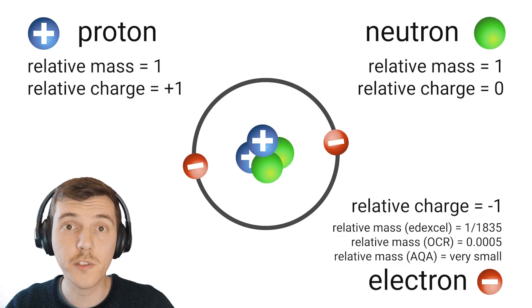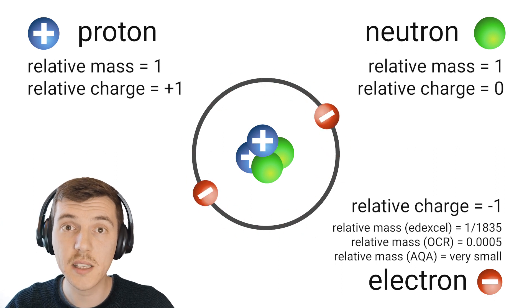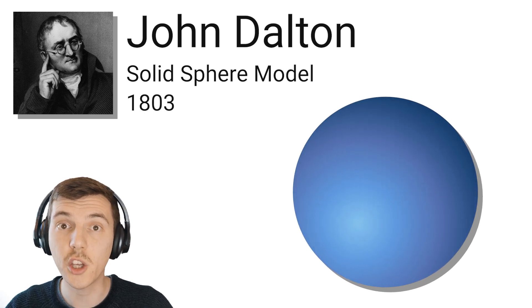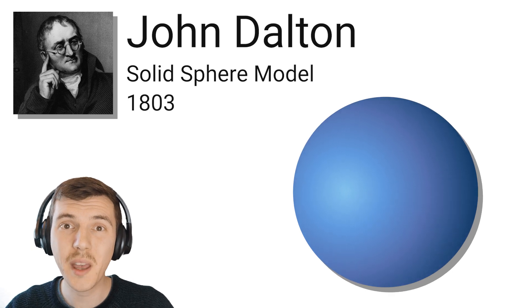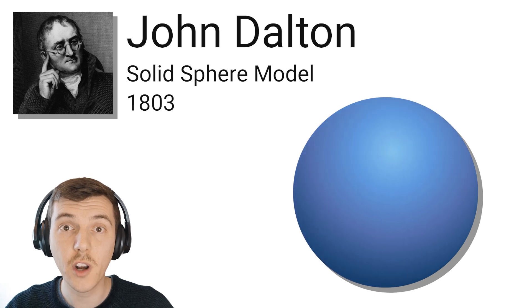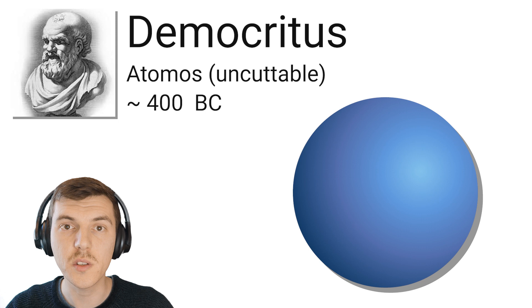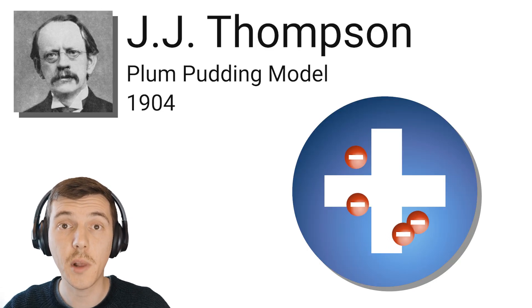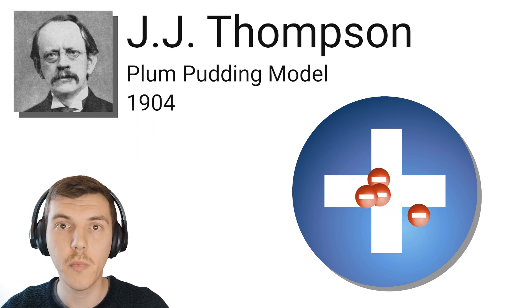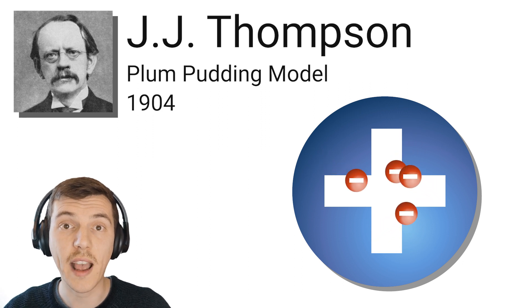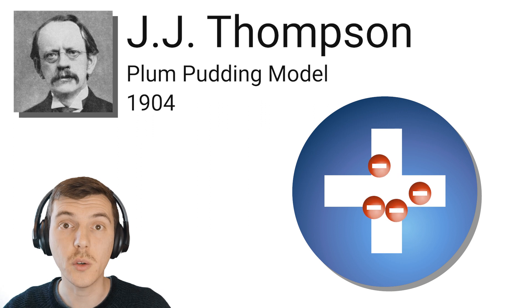We take subatomic particles for granted sometimes, but we haven't always known that they existed. In the early 1800s, John Dalton proposed the idea that atoms were solid spheres that couldn't be broken down into anything smaller. But that wasn't a new idea, and actually if we go back to 5th century BC and we look at a Greek philosopher called Democritus, he already proposed the same idea, using the word 'atomos', that means uncuttable. About 100 years after Dalton proposed his model of the atom, J.J. Thompson came along and called his the plum pudding model. He said that atoms were balls of positive charge with negative charges moving around randomly inside. Those negative charges he called electrons.